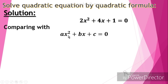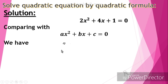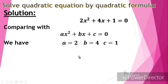Comparing this equation with the general form of a quadratic equation — ax squared plus bx plus c is equal to 0 — and extracting the values of a, b, and c, we have: a is equal to 2, b is equal to 4, and c is equal to 1.